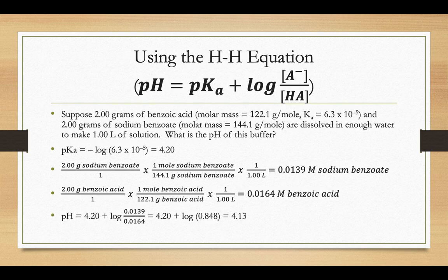We could plug those numbers in to our equation. pH equals pKa plus log of A minus over HA. We know the pKa value. We know the A minus and the HA concentrations. And so the pH of our buffer would be 4.13.